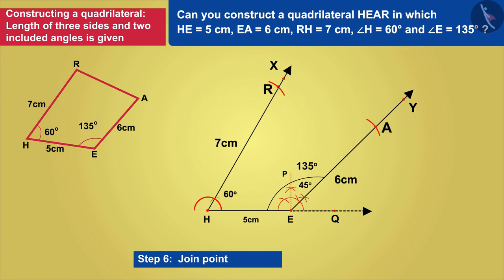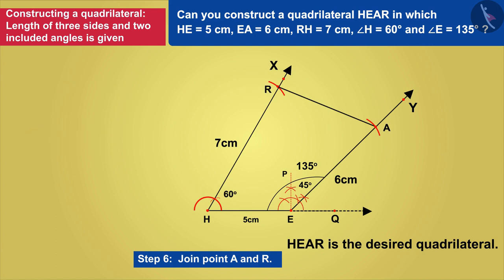By joining the points A and R, we get a desired quadrilateral. In this way, we created the quadrilateral HEAR from the given information.